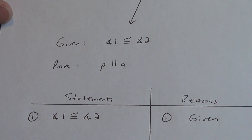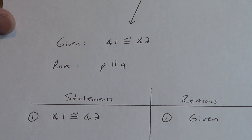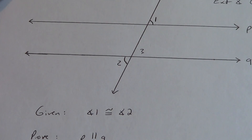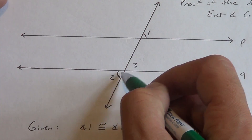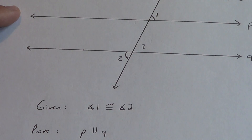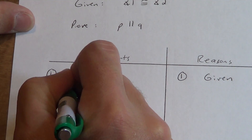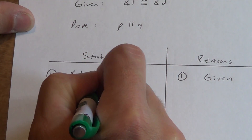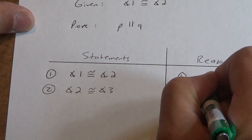You should have done this proof by now on your own. If you got stuck, it's okay — follow along. If you think you got it right, follow along and make sure your answers are matching up with mine. We know that angle 1 is congruent to angle 2 by given. Look at angles 2 and 3 — you should notice that they are vertical angles, so they have to be congruent because of the vertical angle theorem.